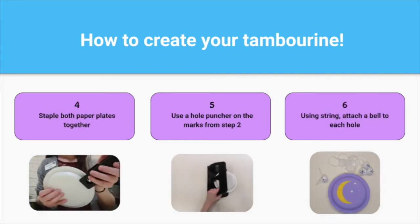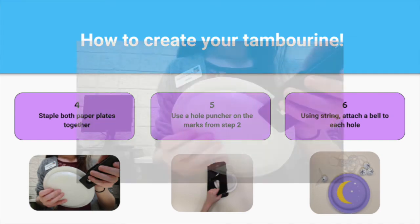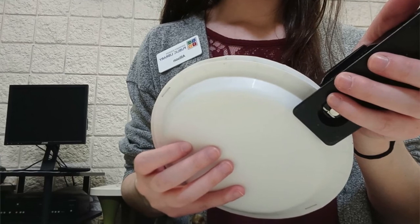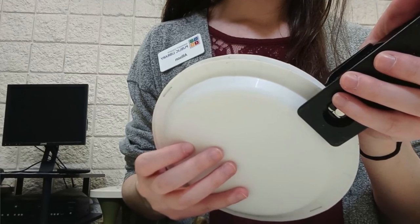Staple the paper plates together. This step shows me stapling the undecorated plates together, but I found that it was easier to decorate them before using the stapler and hole puncher.